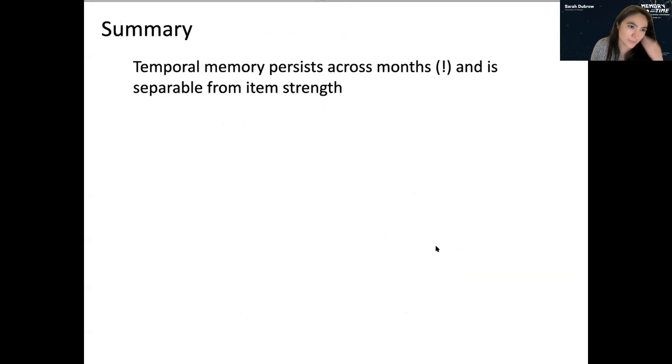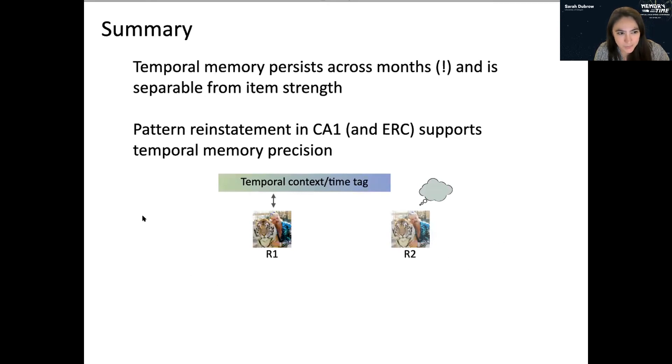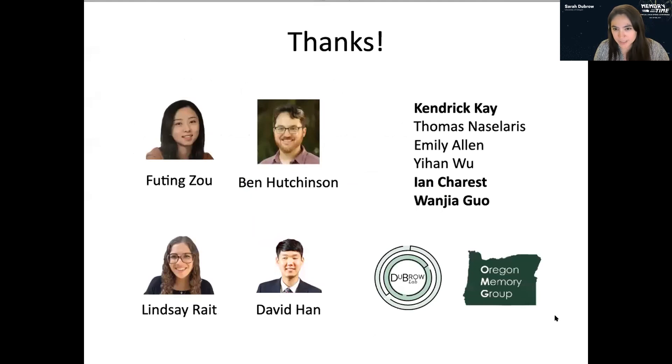So to summarize, temporal memory seems to persist across months, which is exciting, and it seems to be separable from item strength. Pattern reinstatement in CA1 and maybe entorhinal, so reinstating that contextual information seems to support temporal memory precision, which is consistent with this kind of time tag idea that I introduced earlier. And finally, the same regions that encode fine-grained temporal information seem to also be involved in these very long timescale memory judgments.